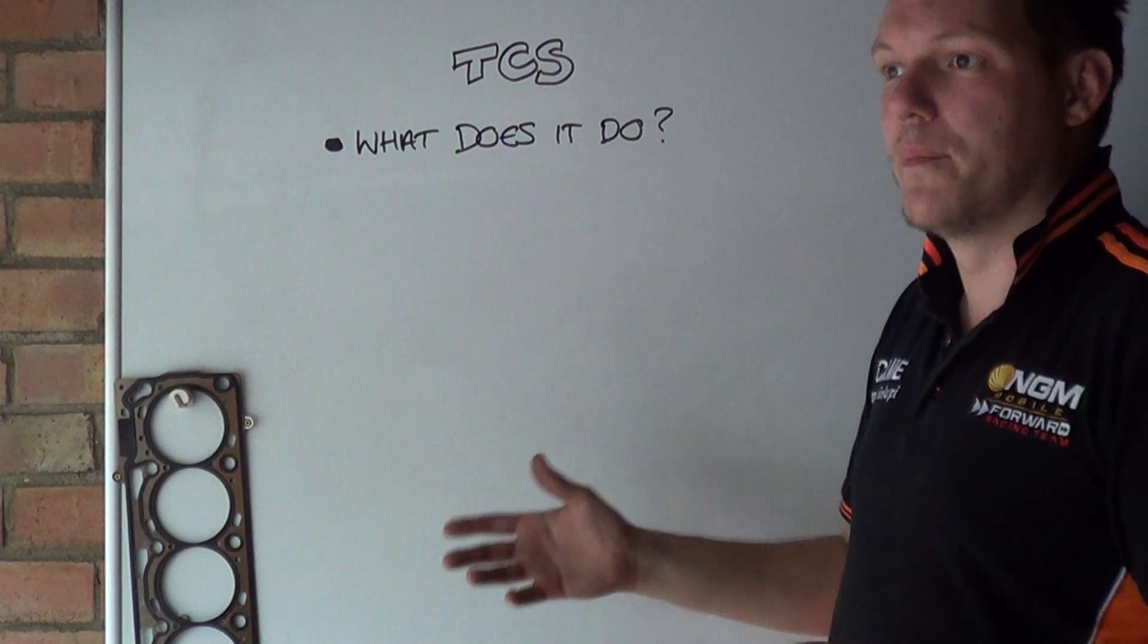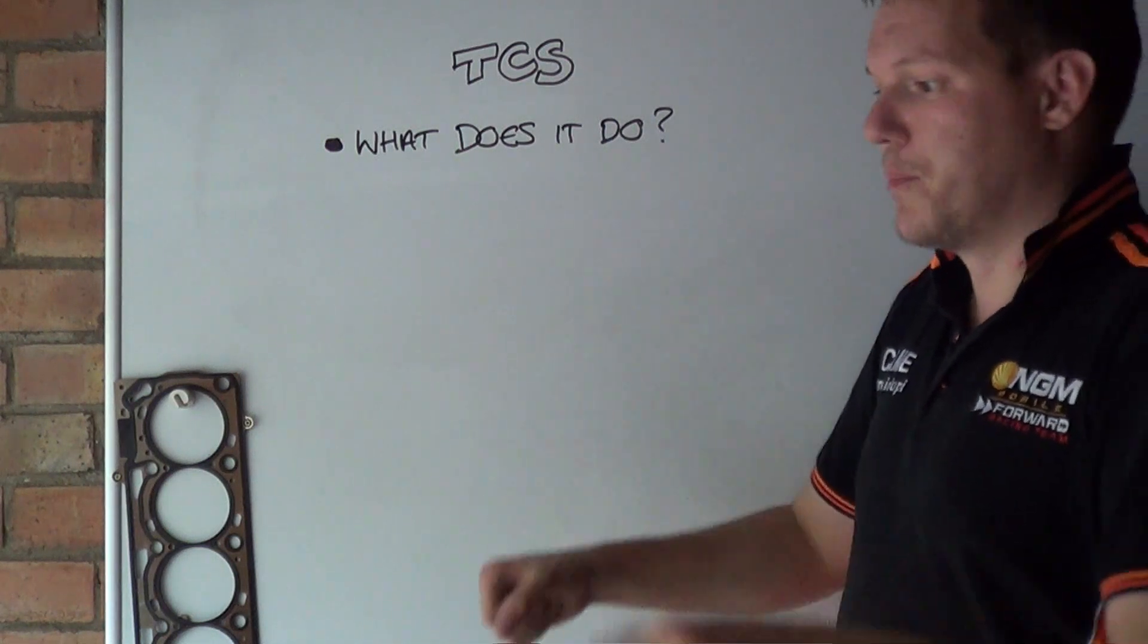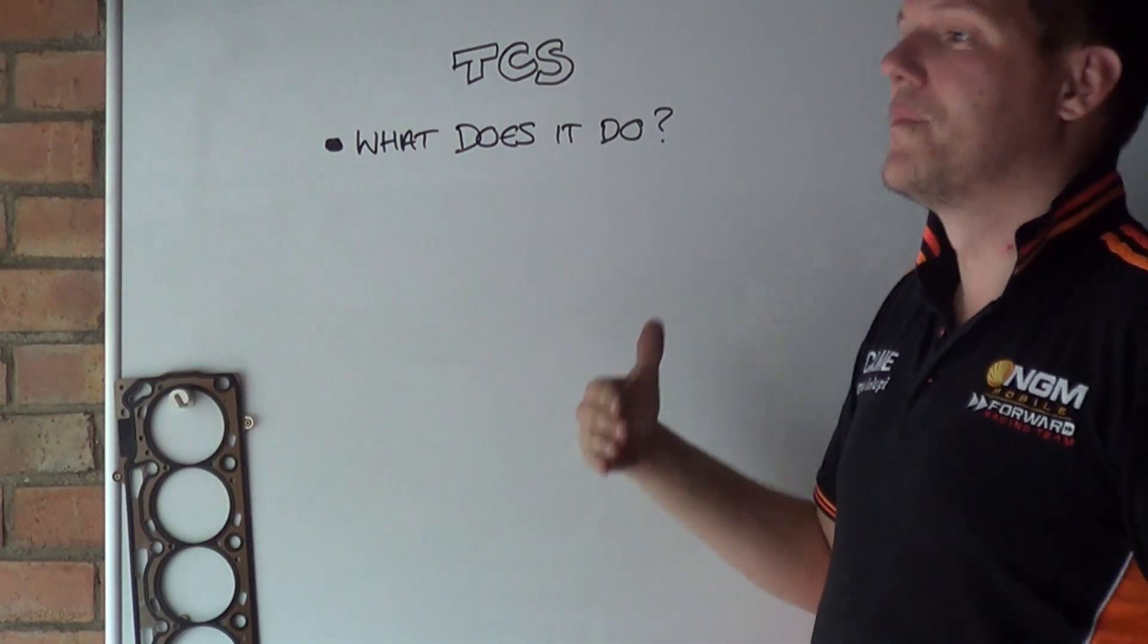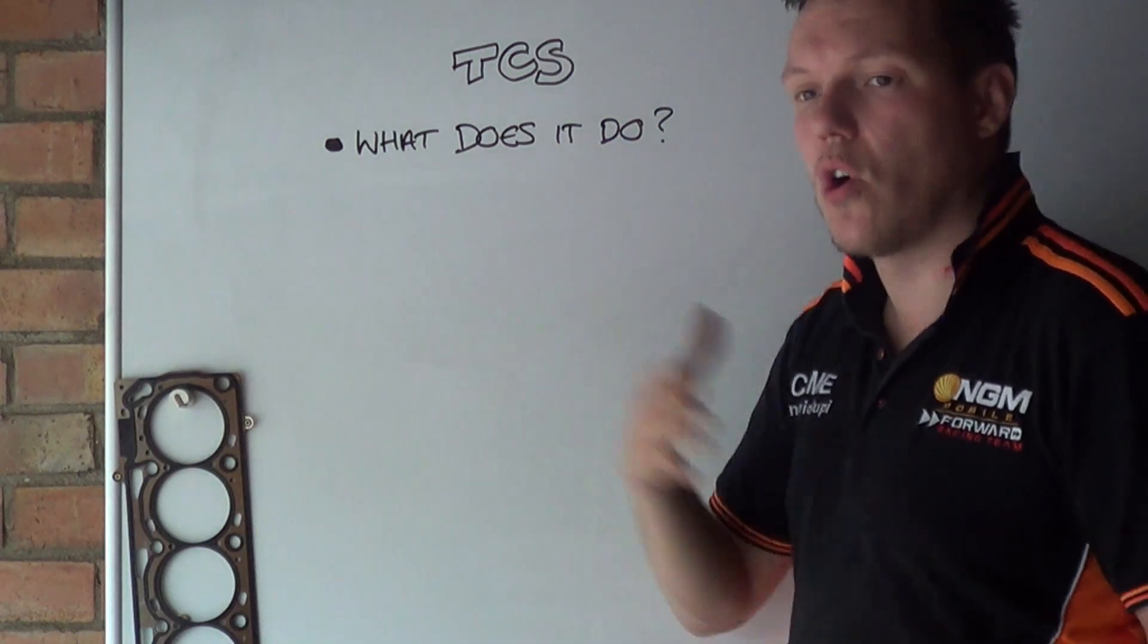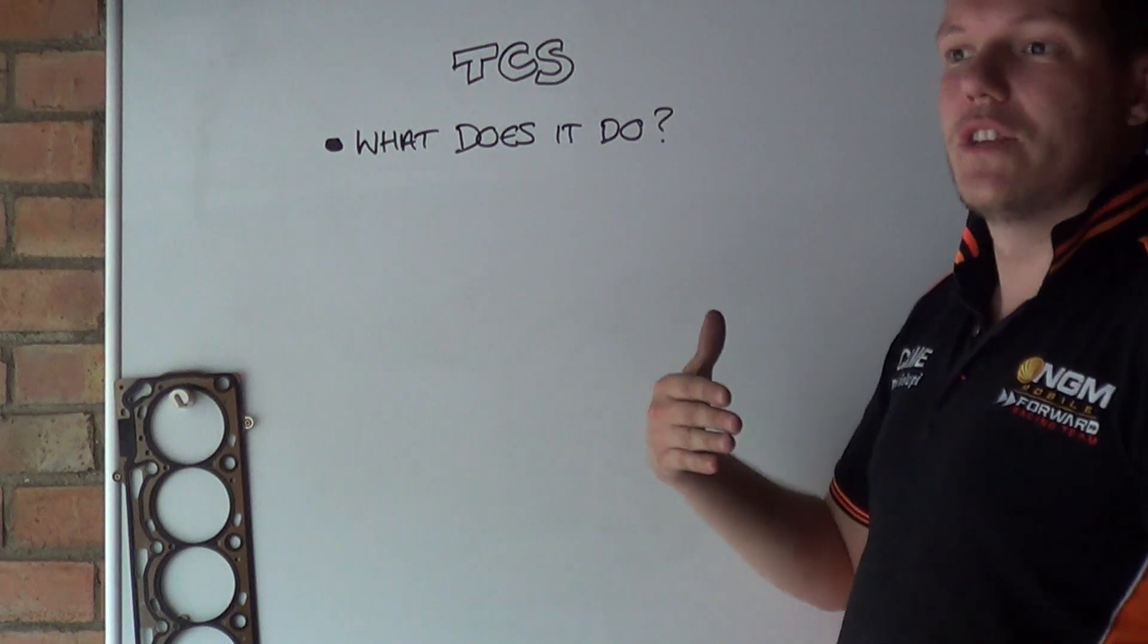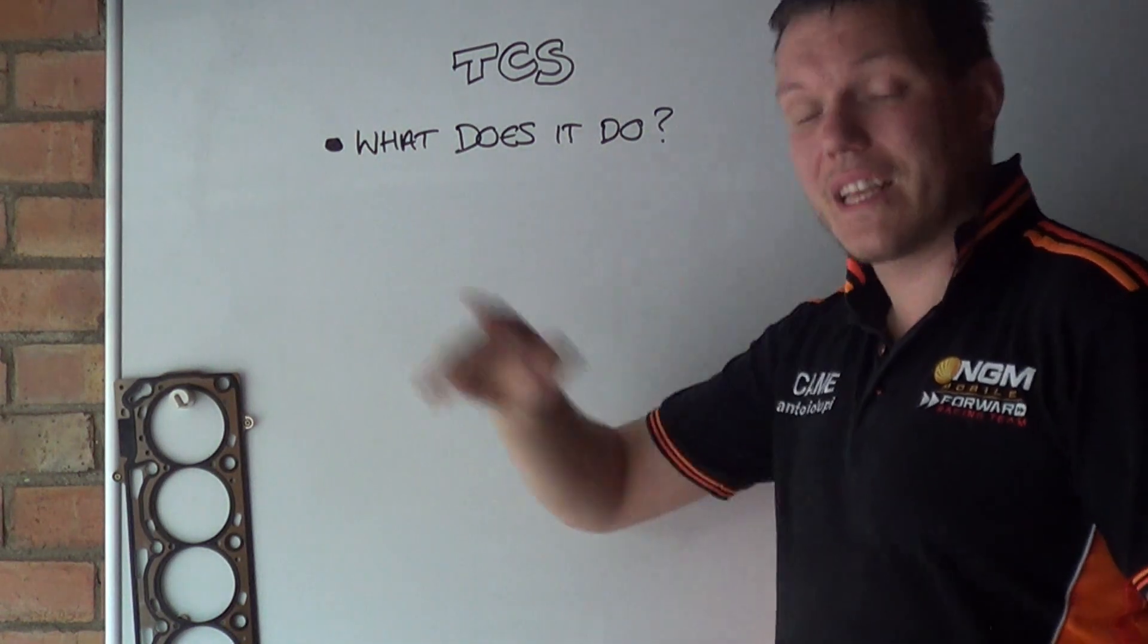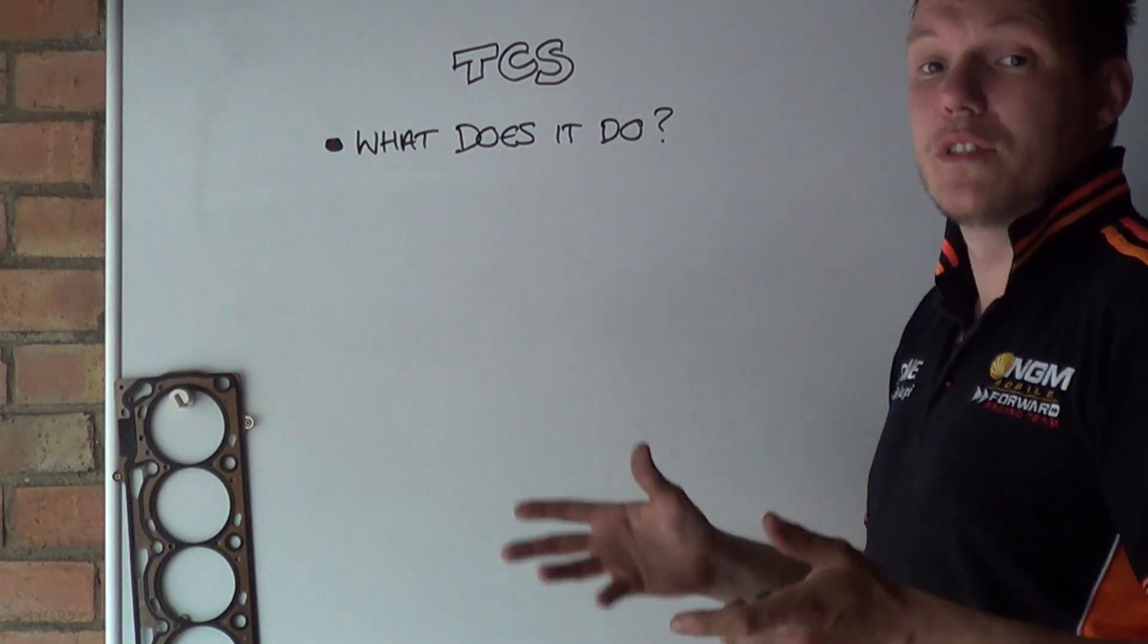So on launch control for the MotoGP you push a button, you give it all the throttle and the bike mediates that throttle, mediates the torque that's applied to the rear wheel so you have the best acceleration curve with minimal to no wheel slip.